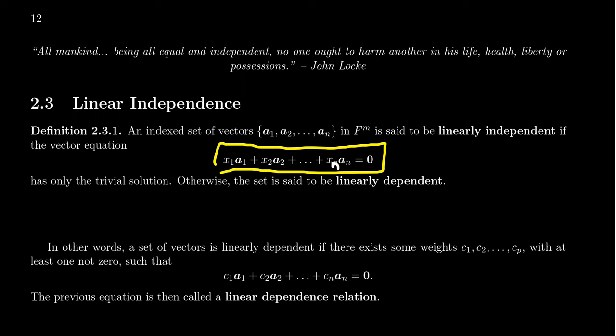We could rewrite this as a matrix equation, Ax = 0. We could also write this as a linear system, the augmented matrix A augmented with 0. This is an example of a homogeneous system.